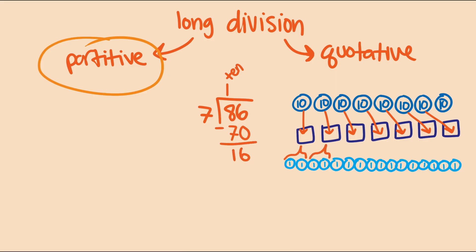how can I distribute the remaining 16 ones across 7 groups? Each group would get 2 ones with 2 ones remaining. So in total, each group gets 12 and 2 7ths.